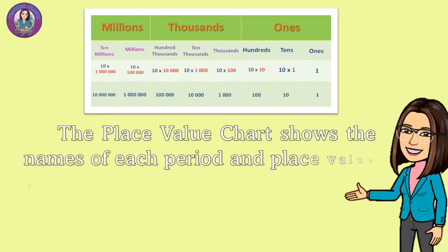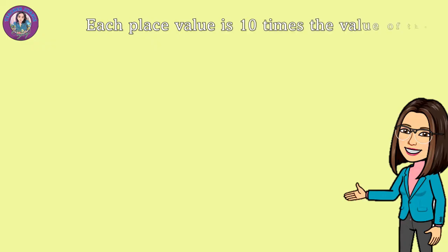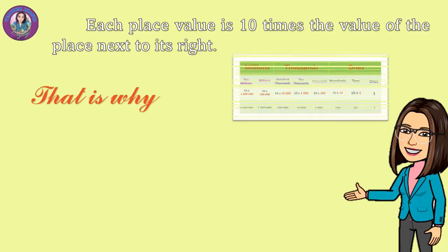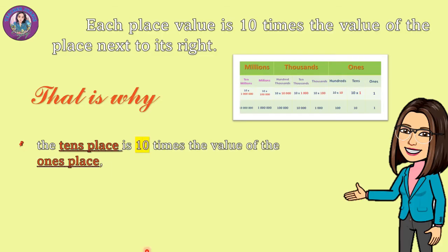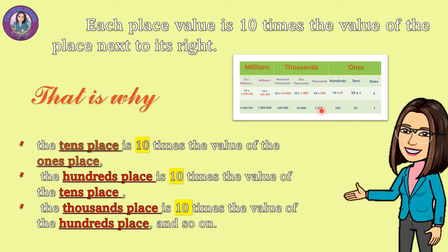The place value chart shows the names of each period and the place value position in the base-10 numeration system. Each place value is 10 times the value of the place next to its right. That is why the tens place is 10 times the value of the ones place — like 1 times 10 is 10. And the hundreds place is 10 times the value of the tens place: 10 times 10 equals 100. The thousands place is 10 times the value of the hundreds place: 10 times 100 is 1,000.